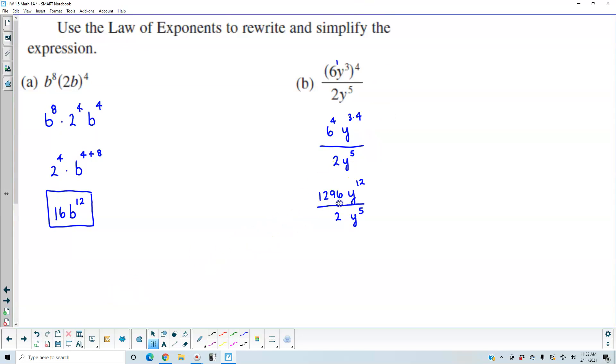So now we need to take 1296 and divide that by 2 which gives us 648. And recall that when you have the same base and you're dividing them you're going to subtract the exponents. So that becomes y to the 12 minus 5. Therefore the result is going to be 648 y to the seventh power.